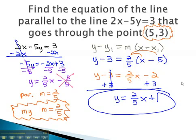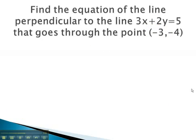Let's try another example, where we use the relationship of a perpendicular line. Here, we're given the equation 3x plus 2y equals 5. To be perpendicular, we need an opposite reciprocal slope.